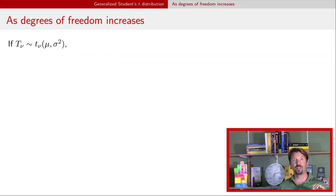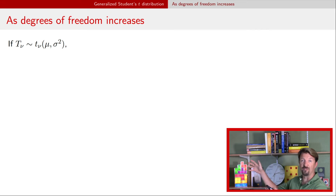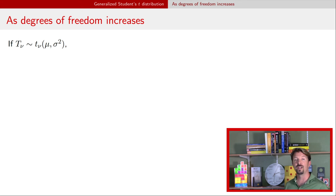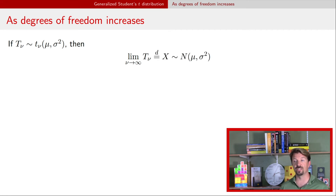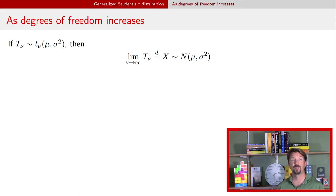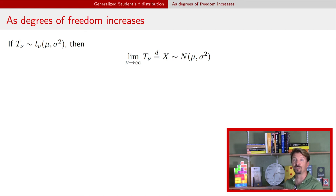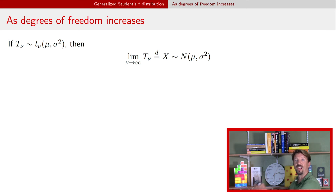Let's talk about what happens to the generalized t-distribution when we take the degrees of freedom and increase them. The random variable t with subscript nu is a generalized Student's t with nu degrees of freedom, location mu, and scale sigma. As the degrees of freedom go to infinity — getting larger and larger — this converges in distribution to a normal distribution centered at exactly the location parameter mu, with variability determined by the scale parameter sigma. This is why the scale is written as sigma squared in the notation: it relates to the normal distribution with mean mu and variance sigma squared.